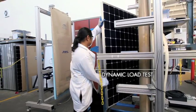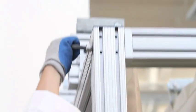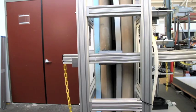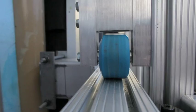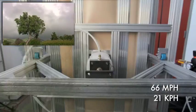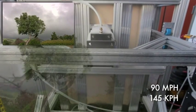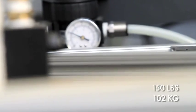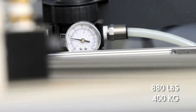This is the dynamic load test, uniquely designed by SunPower to mimic real-world loads. Sure, it may not look like much, but this panel is enduring pressure equivalent to 90 mph winds, applied over and over. That's 880 pounds of weight applied again and again.